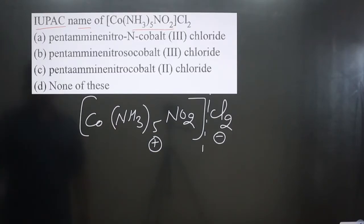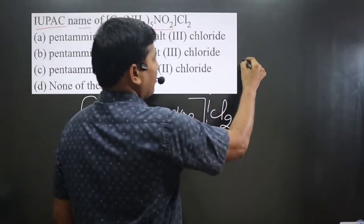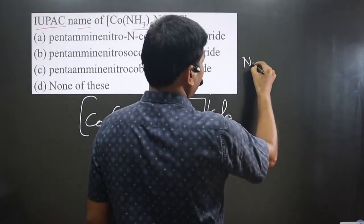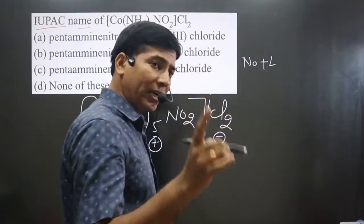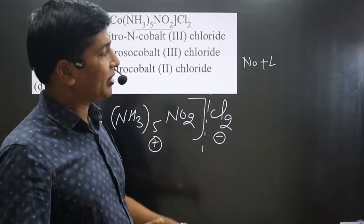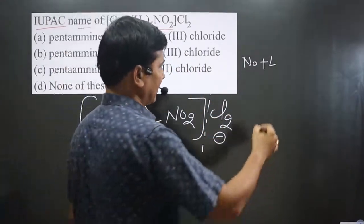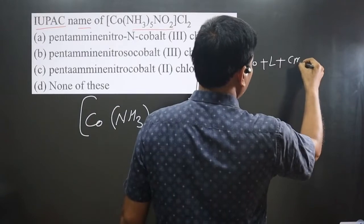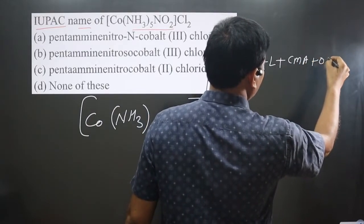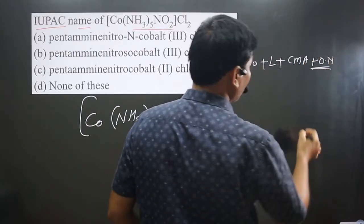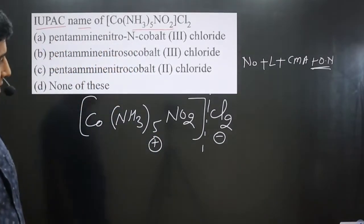The order for naming the complex we follow is: first, number of ligands; then type of ligand. If more than one type of ligand is given, we follow alphabetical order. Then we write the central metal atom, and then the oxidation number of the central metal atom in Roman numerals.